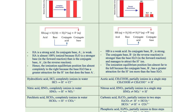A solution of a strong acid HA mainly contains H3O+ and A-. If this is the strong acid we're talking about, it's going to completely dissociate in water and give the hydronium ion or hydrogen proton plus A-, which is the conjugate base. So A- is the conjugate base, and H3O+ is the conjugate acid of the base that was next to our strong acid.